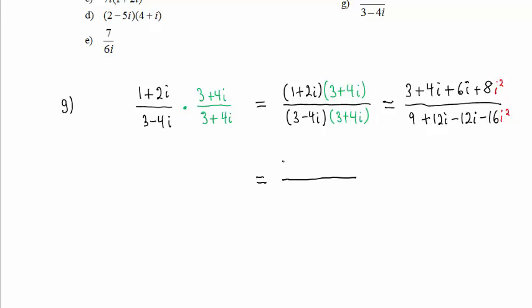In the numerator, we have 3 plus 10i minus 8 because 8 times i squared is 8 times negative 1, which is negative 8, and we write minus 8. In the denominator, we have 9. These two terms are opposites and add up to 0, plus 16 because negative 16 times i squared is negative 16 times negative 1, and that is plus 16.